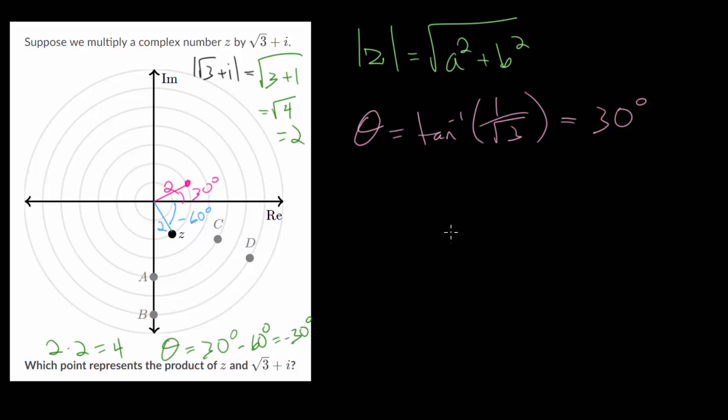So we need to find which point would be on the fourth rung and would be at an angle of negative 30. We can see that the fourth rung is right here and this line would be about a negative 30 degree angle. So this complex number C would have a magnitude of 4, it's on the fourth rung here, and this angle is roughly negative 30 degrees. So choice C looks to be the correct answer here.